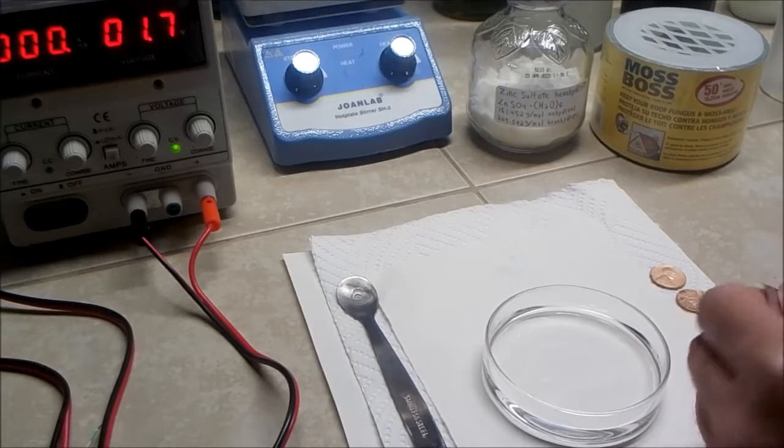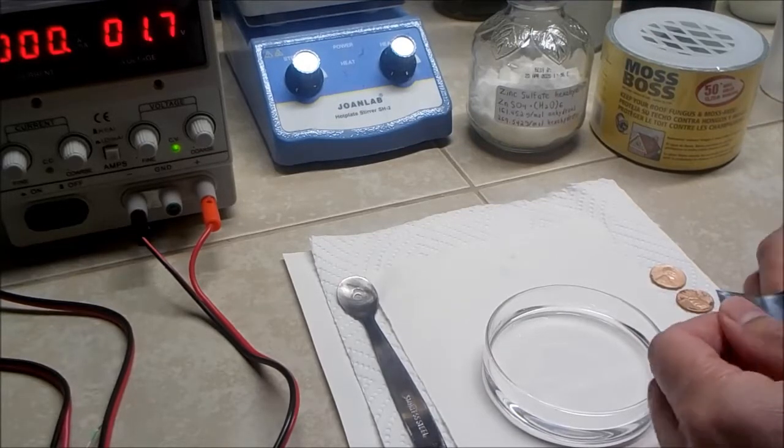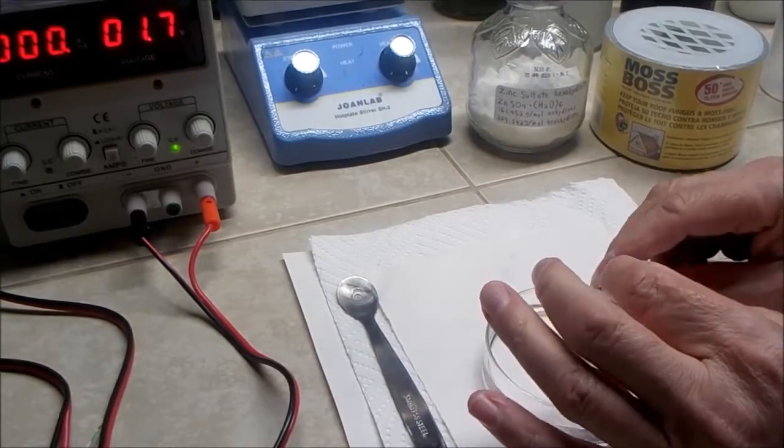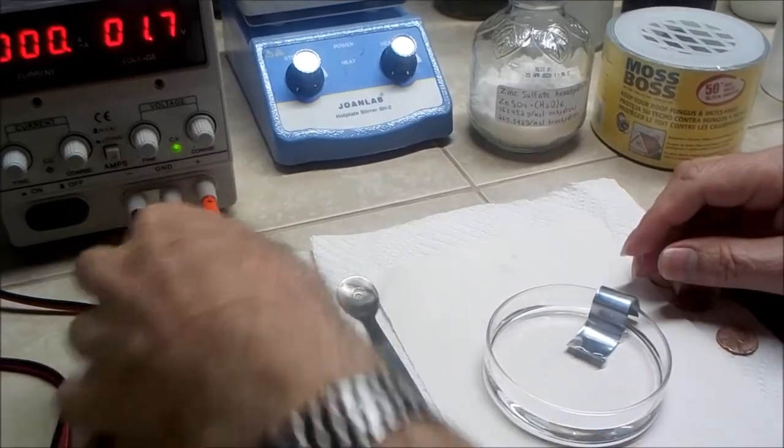I am bending it into a shape that I can set down into the dish and clip the positive lead from the voltage source onto the zinc.